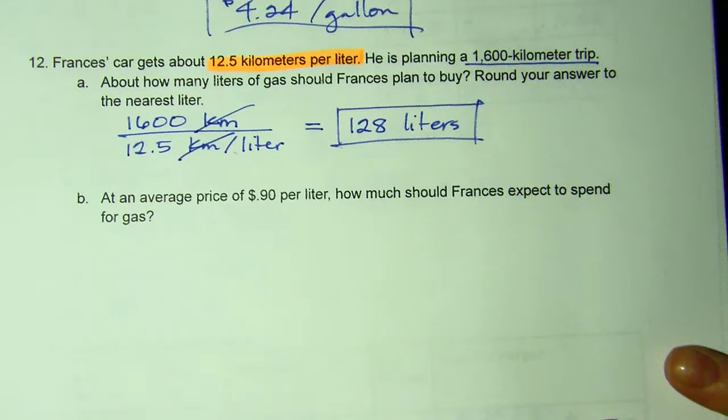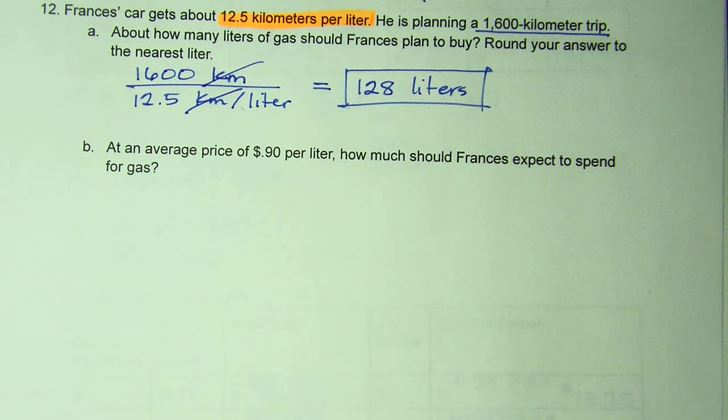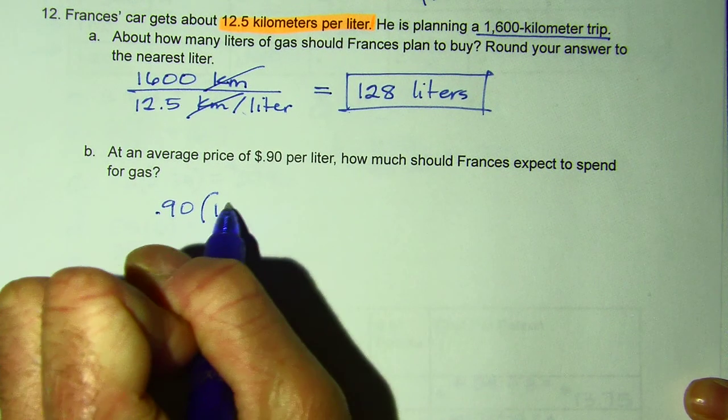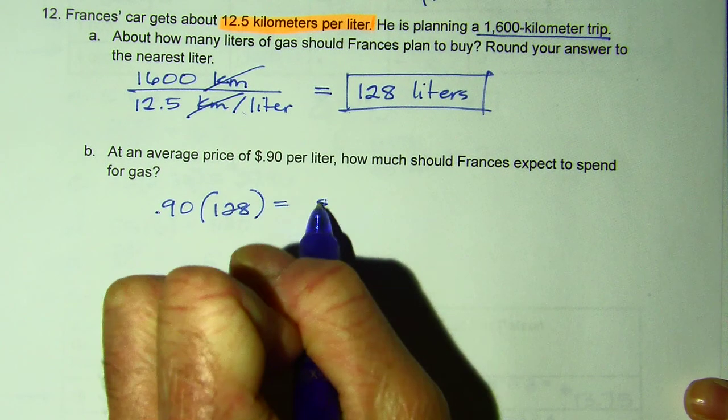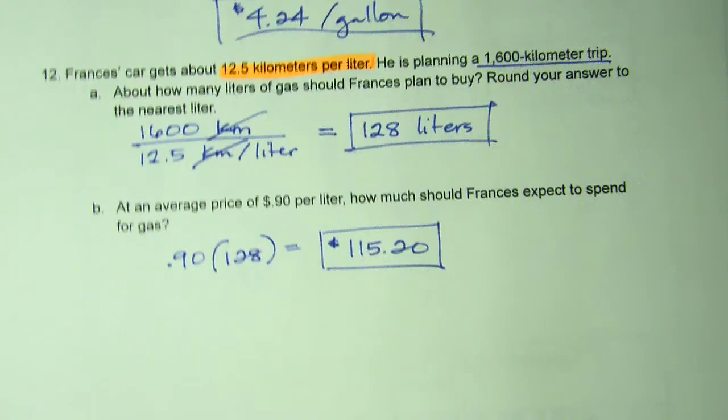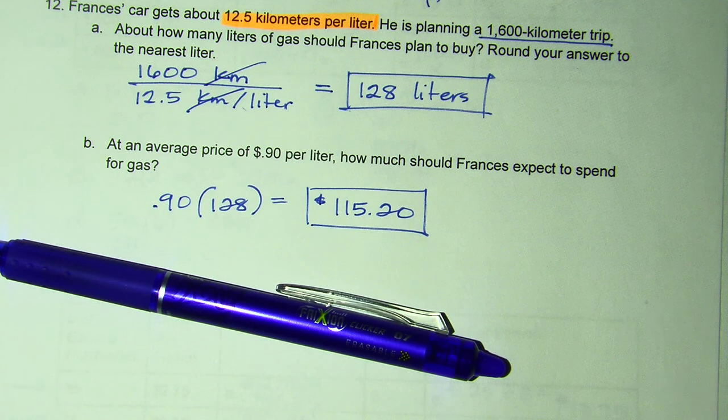The bottom, he pays $0.90 on average per liter. So $0.90 times the number of liters would give me a total of $115.20. There are a lot of conversion exchange rates on the homework, so make sure you use that example to do it.